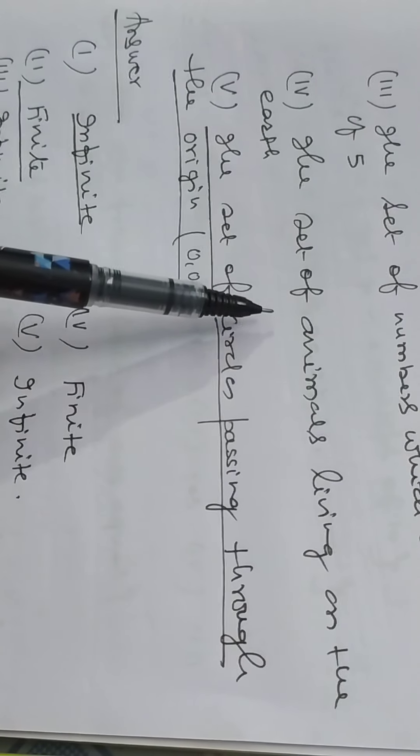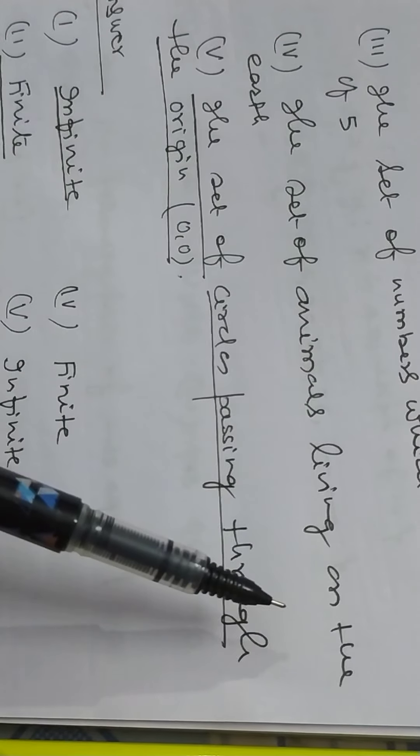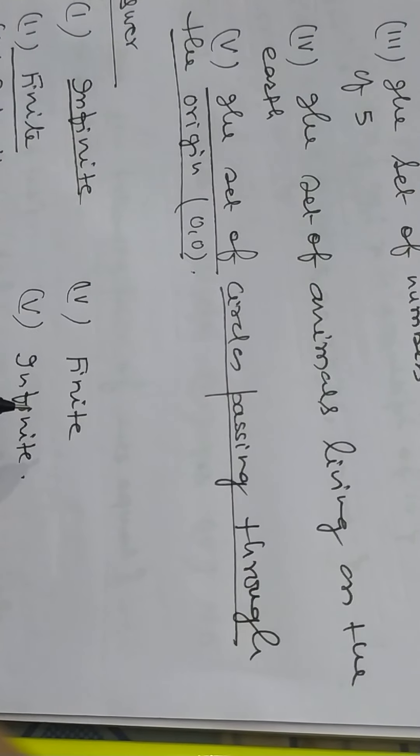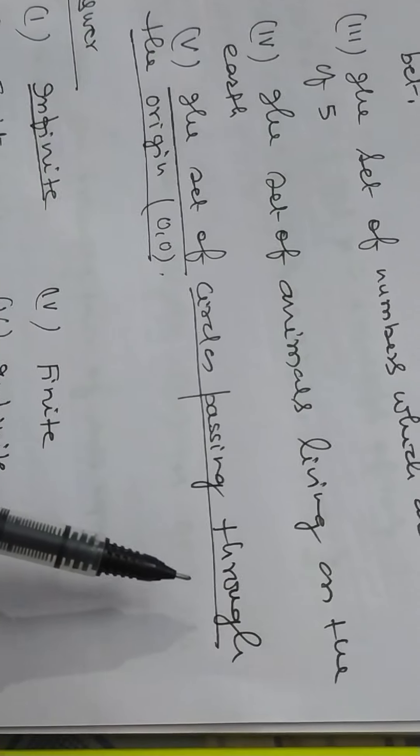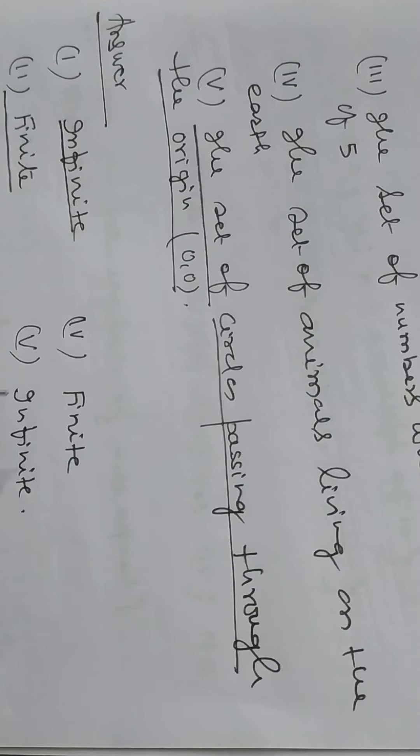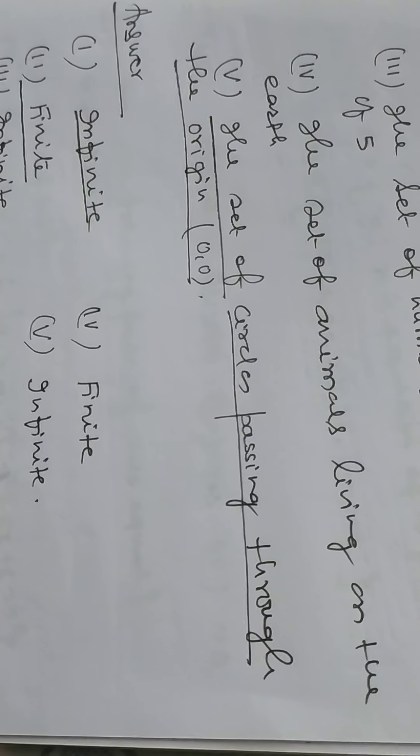Now problem number four, the set of animals living on the earth is finite. The set of circles passing through the origin, it is also infinite.